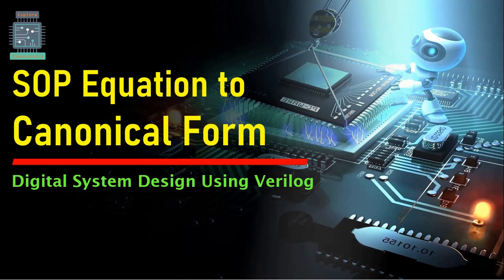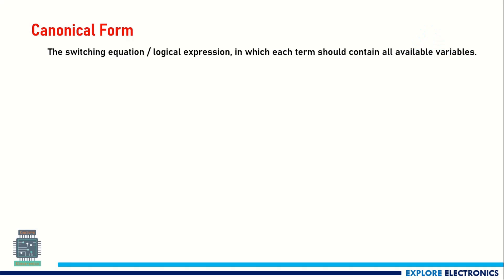Hello everyone. In this video let us see how to convert an SOP equation to canonical form. A Boolean expression — also called a switching equation or logical expression — is in canonical form when each term of the expression contains all available variables.